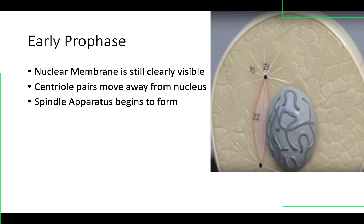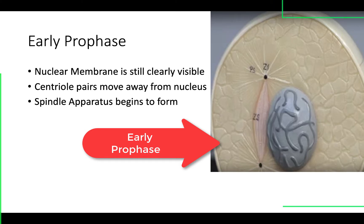In our lab model, we have early prophase and late prophase. In early prophase, we can see that the nuclear membrane is still there — that's how we know it's early prophase. But we can see that the centrioles have started to migrate, and we can begin to see that spindle apparatus forming. The spindle apparatus forming tells us we're in prophase, and the nuclear membrane still being there tells us it's early prophase.